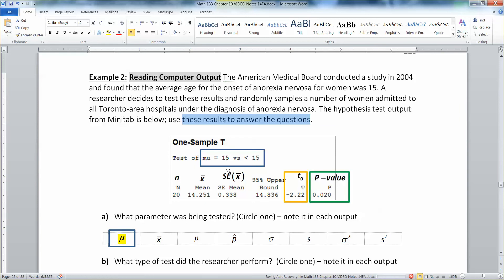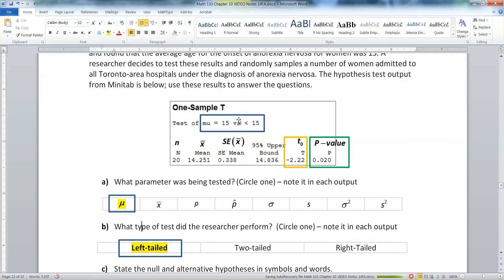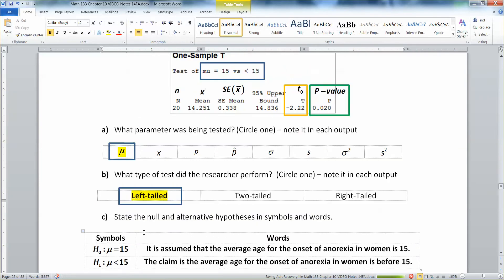You can see I've already circled and highlighted some things but we'll run through them. So what parameter is being tested? You can see that it's mu. Minitab actually writes it out in words rather than having a symbol. So you have to know that symbol is mu which is this one over here on the left. Now what type of test did the research perform? Well it's left tailed because you can see mu equals 15, that's the null versus mu less than 15 which means it's a left tailed test. It also means that the symbols for your hypotheses are right down here. Mu equals 15 is your null hypothesis. Mu less than 15 is your alternative hypothesis.